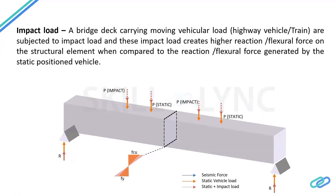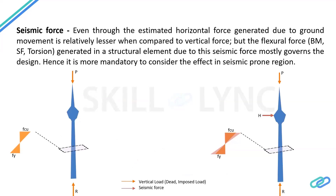Why is dynamic analysis required? We can classify this under two things: impact load due to moving loads, and seismic load. For impact load on a bridge, when the wheels are in a static position, the beam deflects with some bending moment, shear, and stresses in the extreme fiber. But when the vehicle moves, the beam is subjected to additional deformation, additional reaction, bending, and stresses. We need to compute these and design the structural element accordingly.